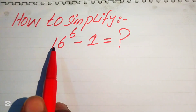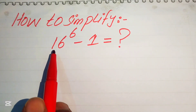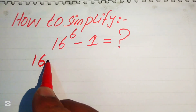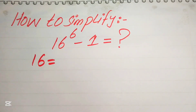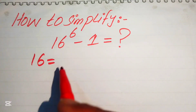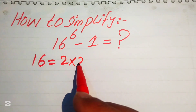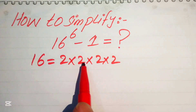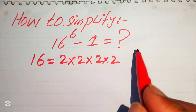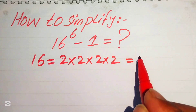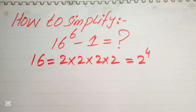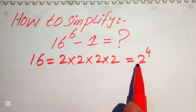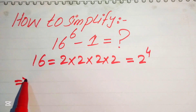First, we need to focus on the base of this term. The base is 16, and we write 16 as 2 × 2 × 2 × 2, which gives us 2 to the power of 4. So we replace 16 with 2⁴ in our expression.